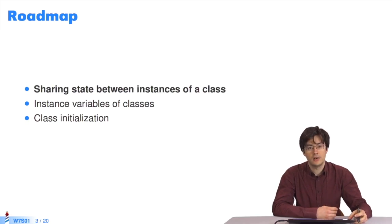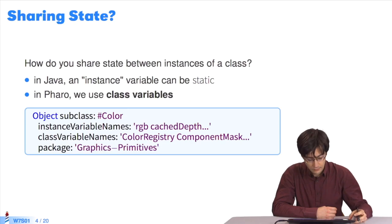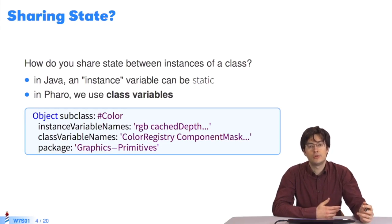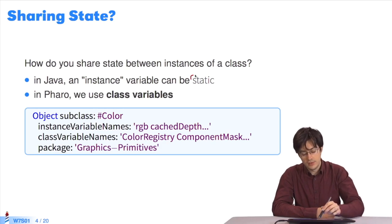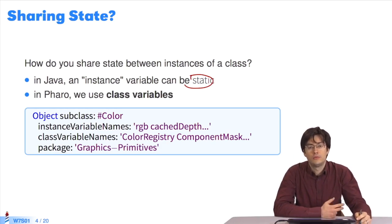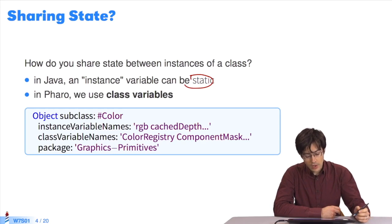First up, how to share a state between instances. Here we have a class with several instances. To share a state, these instances require a common object. In Java, we use an instance variable that takes the keyword static. The value of a static variable is the same for all instances. In Pharo, we use class variables.